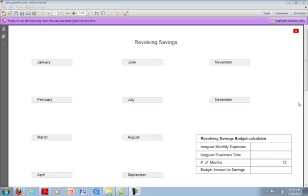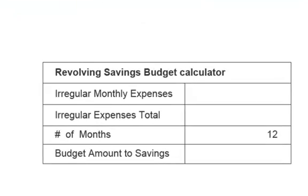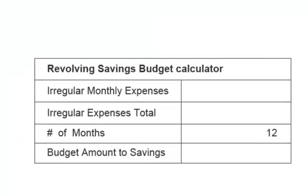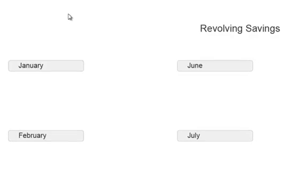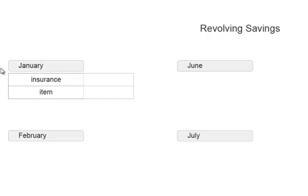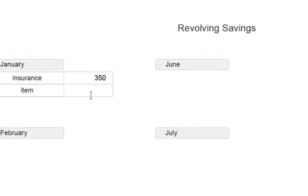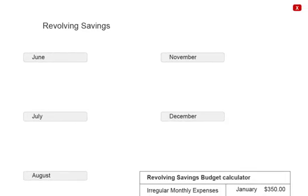In the revolving savings section of the Financial Checkup tool, you will list your irregular monthly expenses according to the month they occur in. The tool will determine the total amount of your regular expenses and divide it by the number of months to determine the amount of money that will come out of your monthly budget and go into revolving savings to cover the time period. To record an irregular monthly expense, click on the month in which it occurs, type in a description of the item and the amount. You can record up to four irregular monthly expenses for each month.